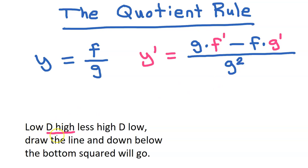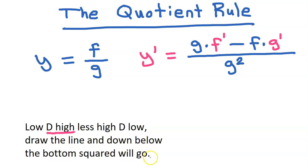Some people like to sing this, maybe with the tune of Old MacDonald Had a Farm. So that would be something like: low d high, less high d low, la la la la la, draw the line and down below the bottom squared will go.